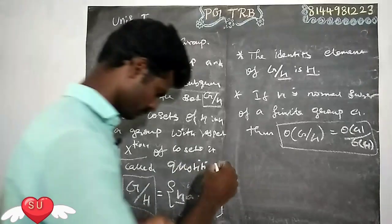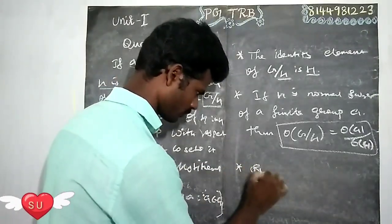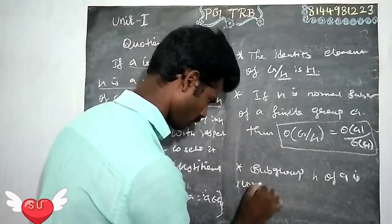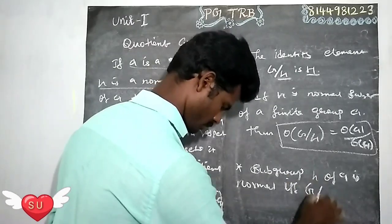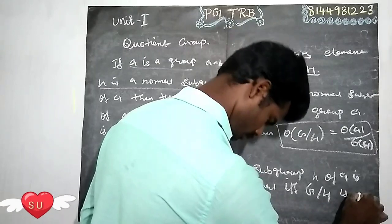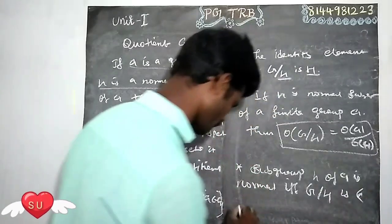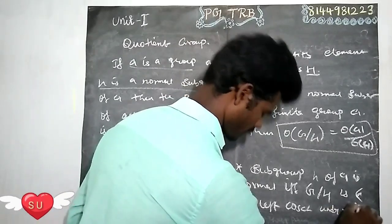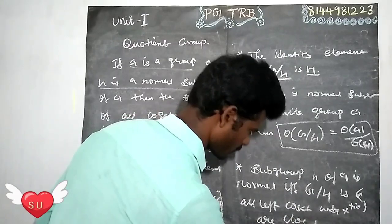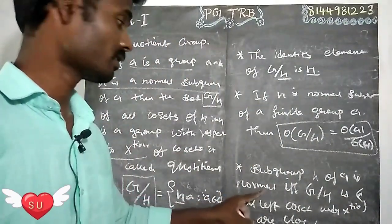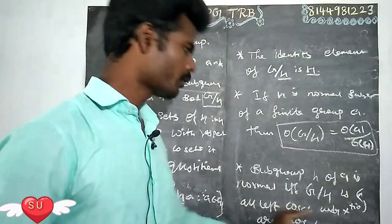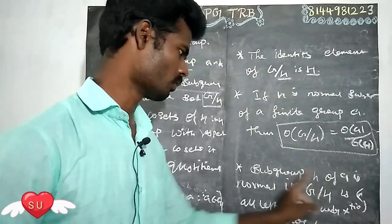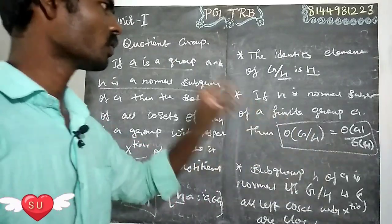Next point: subgroup H of G is normal if and only if G divided by H — the set of all left cosets — is closed under multiplication. So, if G/H is closed, that is the important point here.